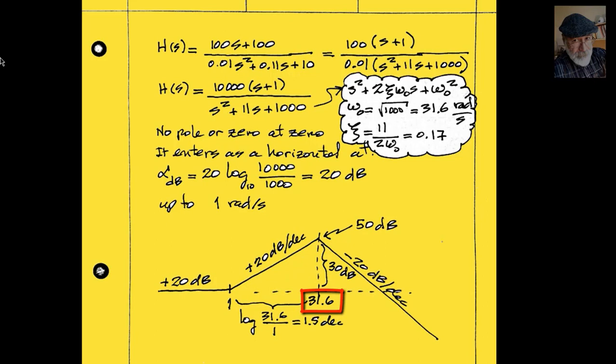Up to the double complex pole at omega naught 31.6 radians per second, which is contributing with a negative slope of negative 40 decibels per decade. So, the curve takes a dive with a salient slope of negative 20 decibels per decade.